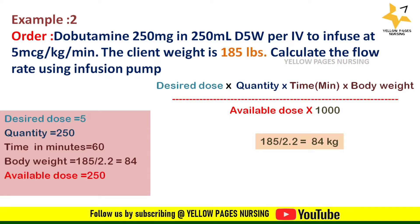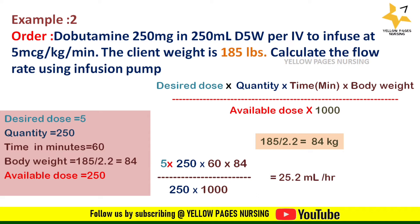Available dose is 250. Applying all into the formula, we get the answer 25.2 ml per hour. Hence the rate of infusion for this calculation will be 25.2 ml per hour.